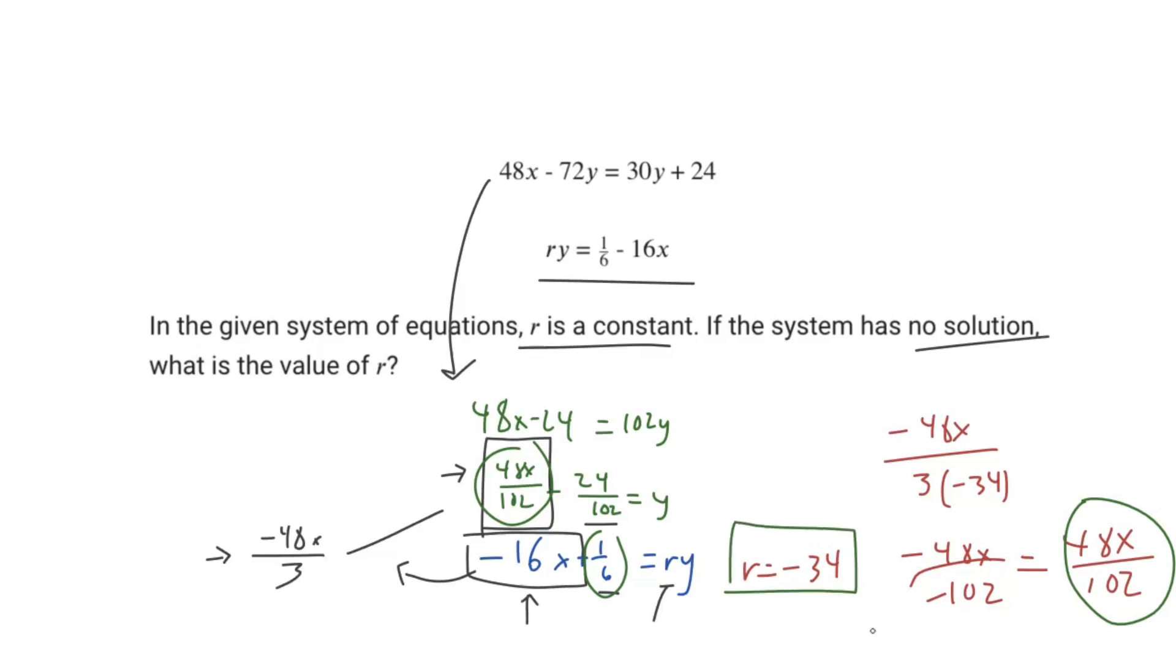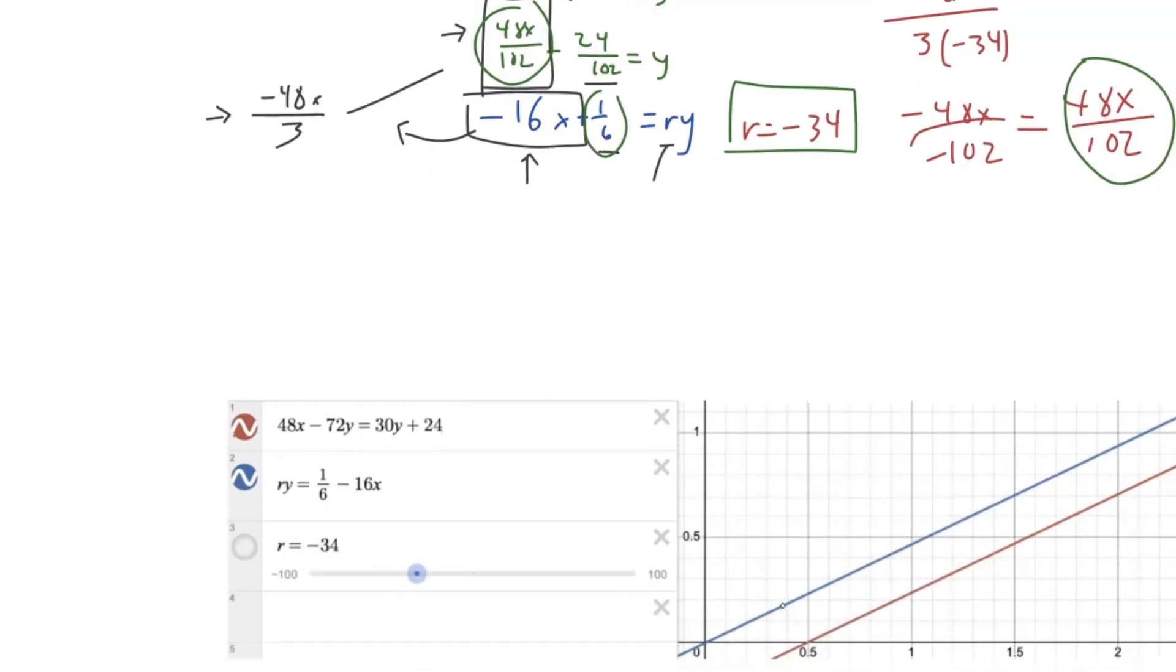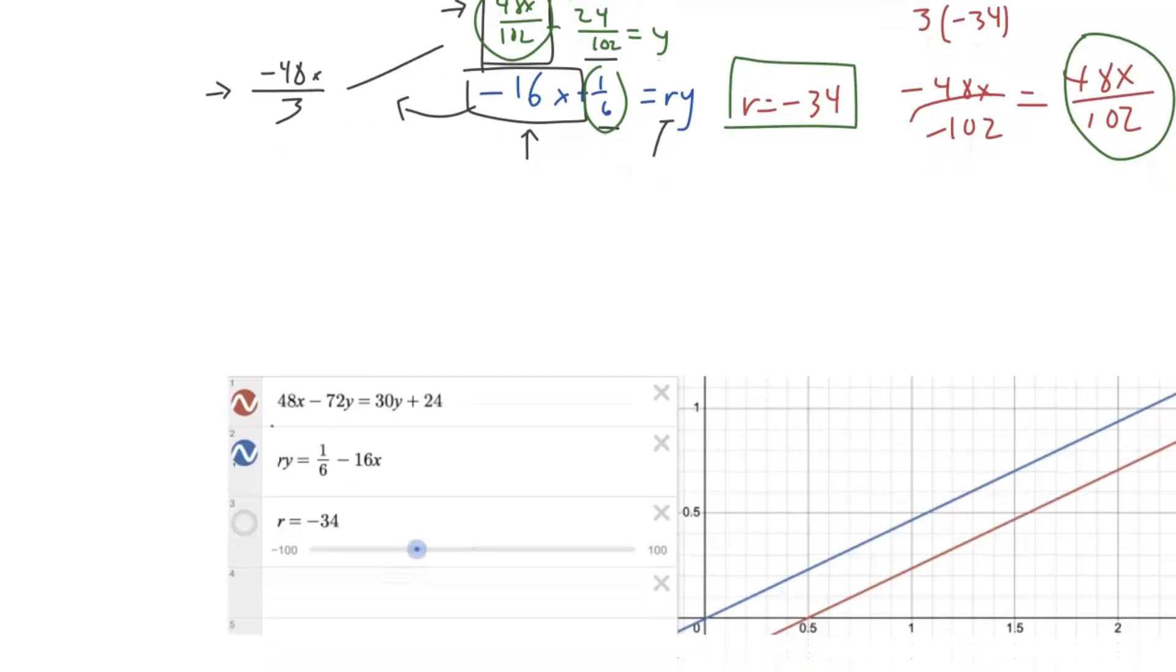But that was such a long, complicated process. So there is an easier way, and that easier way is, of course, Desmos. All you got to do is plug the top equation in, plug the second equation in, have that r, set a slider for r, and just drag that point.